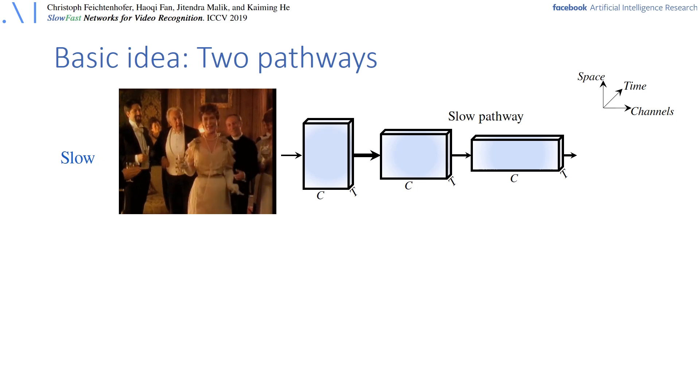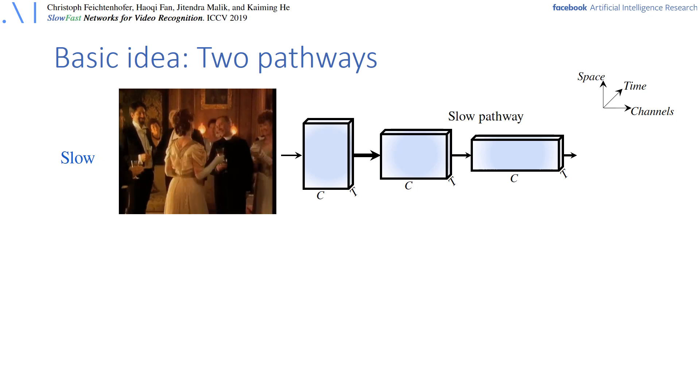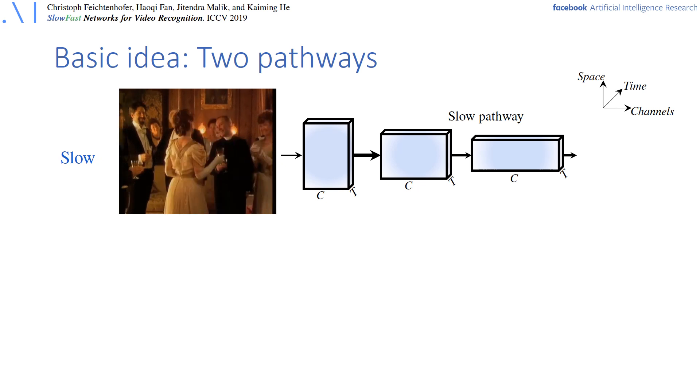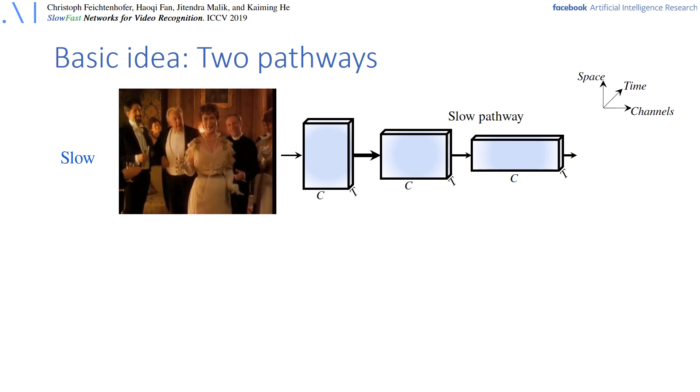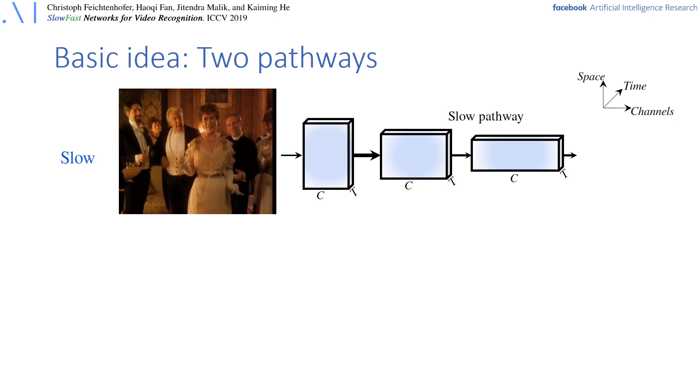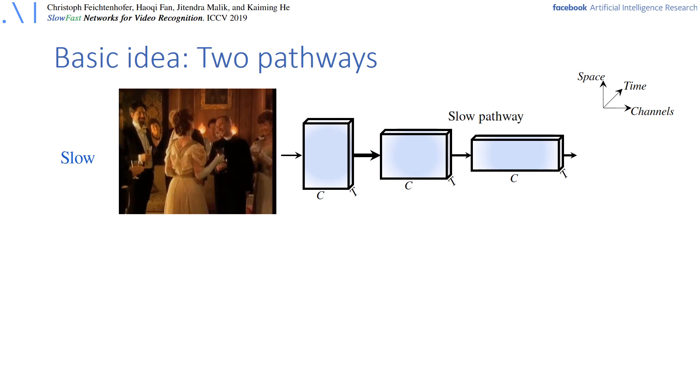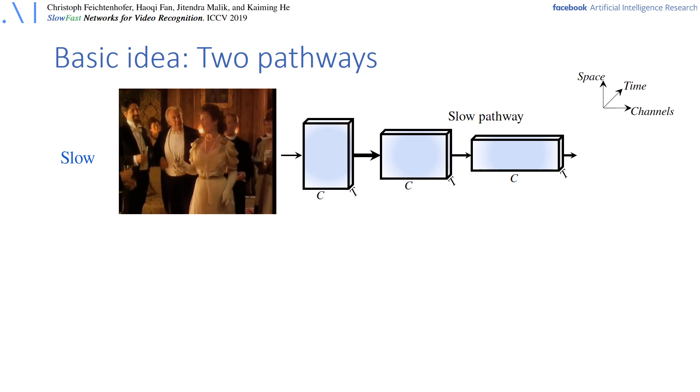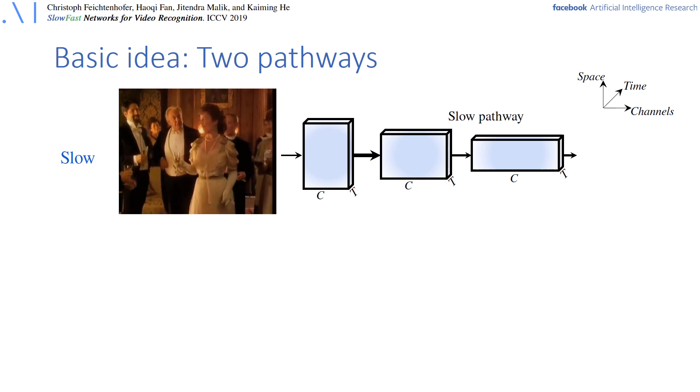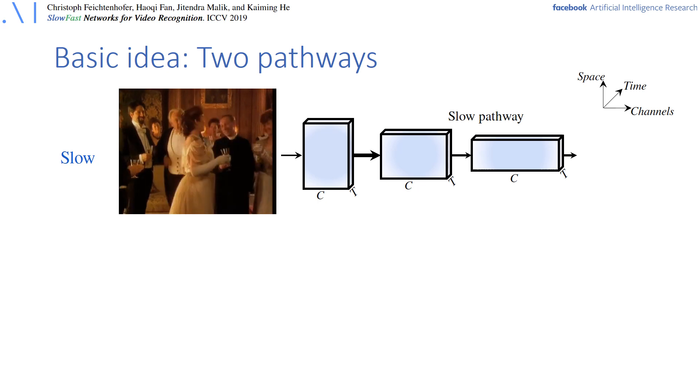The basic idea of the SlowFast network architecture is to have a slow pathway that captures semantic information by operating at low frame rate, and a fast pathway that captures motion information at a higher frame rate. The slow pathway here is a spatiotemporal residual network, similar like the convolutional network shown before, that is applied to low frame rate video and therefore has a lower temporal resolution T.